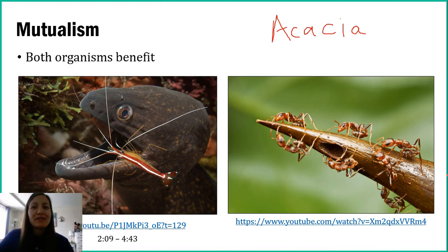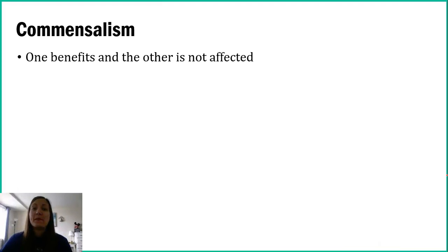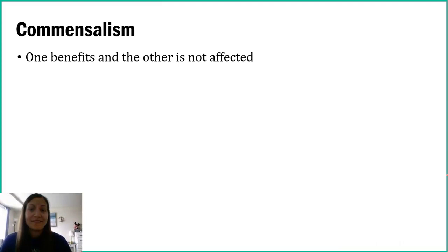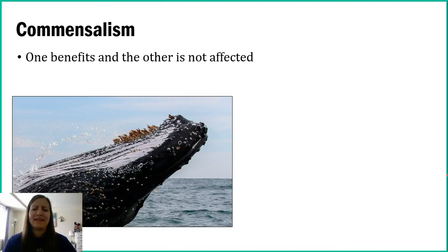The next example we'll take a look at is commensalism. With commensalism, one organism is clearly benefiting and getting some sort of perk from the association, whereas the other organism isn't really affected — not positively affected, not negatively affected. It's just kind of neutral.